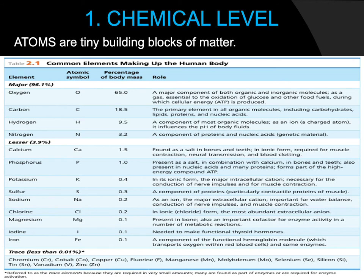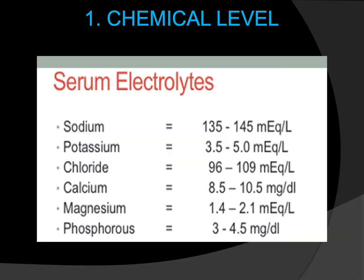Nutrients are important for our cells to live. When elements are combined together, we get what are called minerals, which are nutrients we need to take usually from our diet — some can be taken via supplements — and they help our body to function. These are the serum electrolytes, sometimes called chemicals, minerals, or elements, as mentioned from the previous slides.